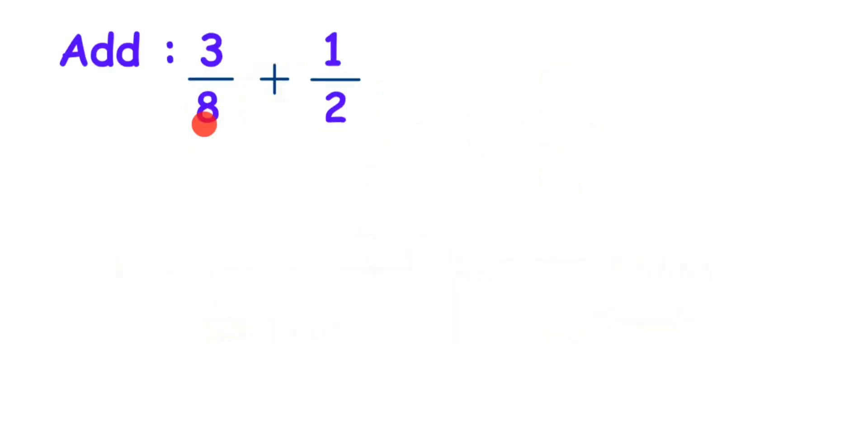So this is the question: we have 3 by 8 plus 1 by 2. Whenever you add fractions, you have to see that the denominators are the same. In this case we have 8 and 2, and they are not the same. When the denominators are the same, then we can add them by just adding the numerators. Now to make them the same, I'm going to take the LCM of the denominators.